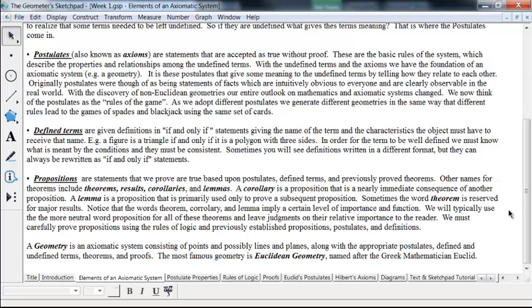Now, theorem, corollary, and lemma imply a certain level of importance and function. A lot of people use the word theorem for any of these, and that's appropriate if you want to do that. But we're going to typically use the more neutral word called proposition for all of these things—lemmas, theorems, results, corollaries, whatever we have—and leave the judgment of the relative importance up to the reader. So we won't try to say that this one's important or that one's less important, at least not in what we name it. Occasionally, we'll refer to a really big result as a theorem.